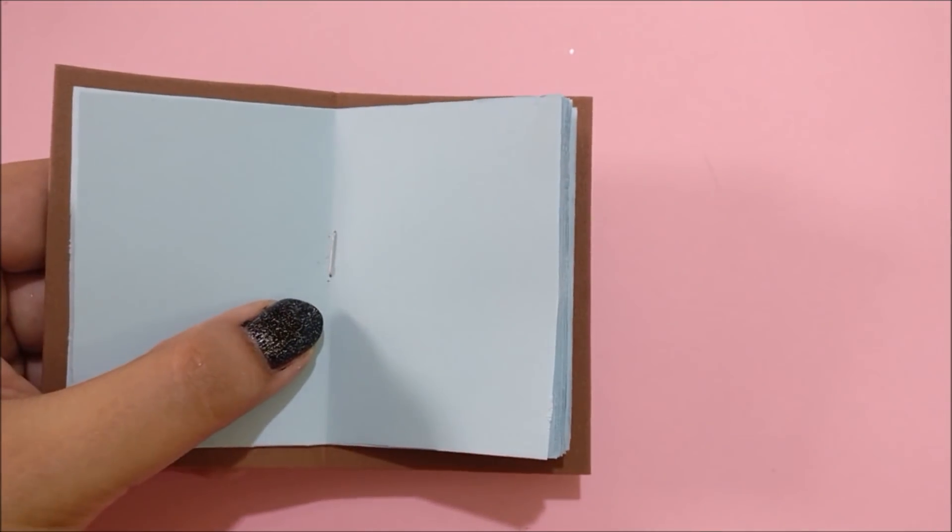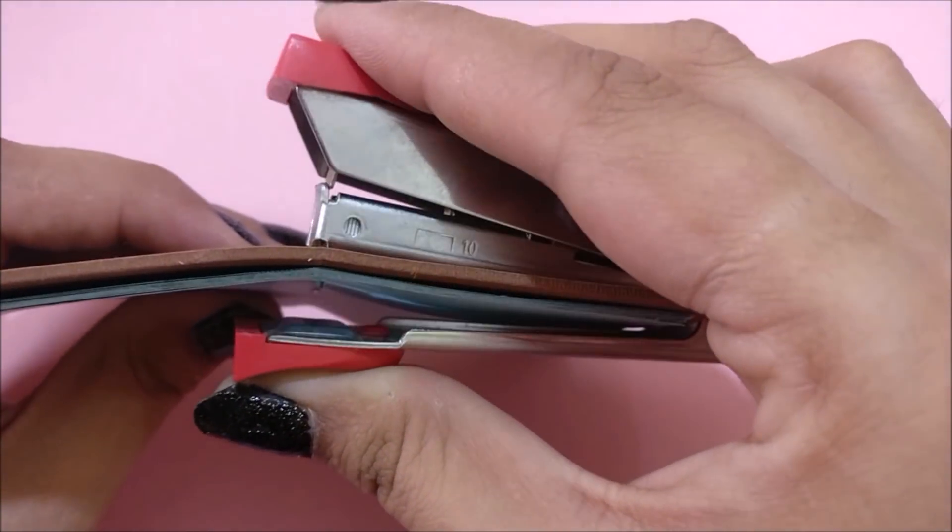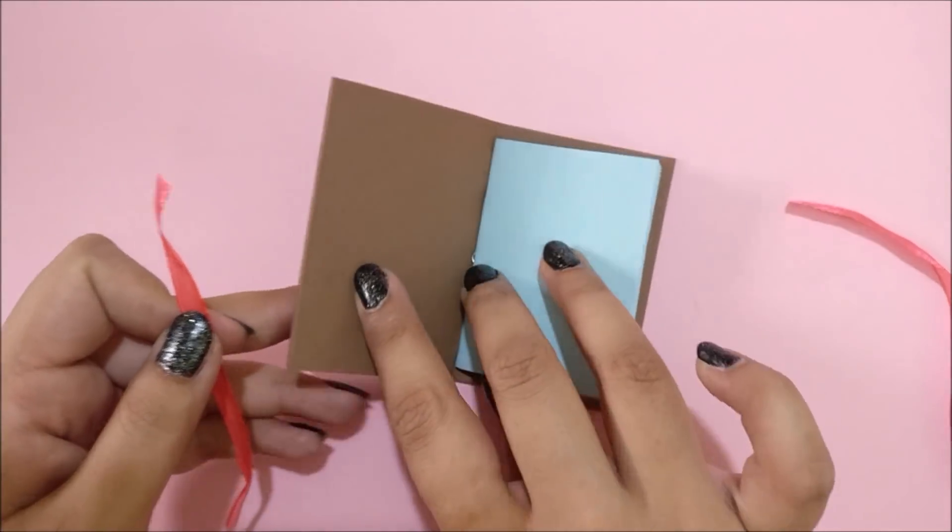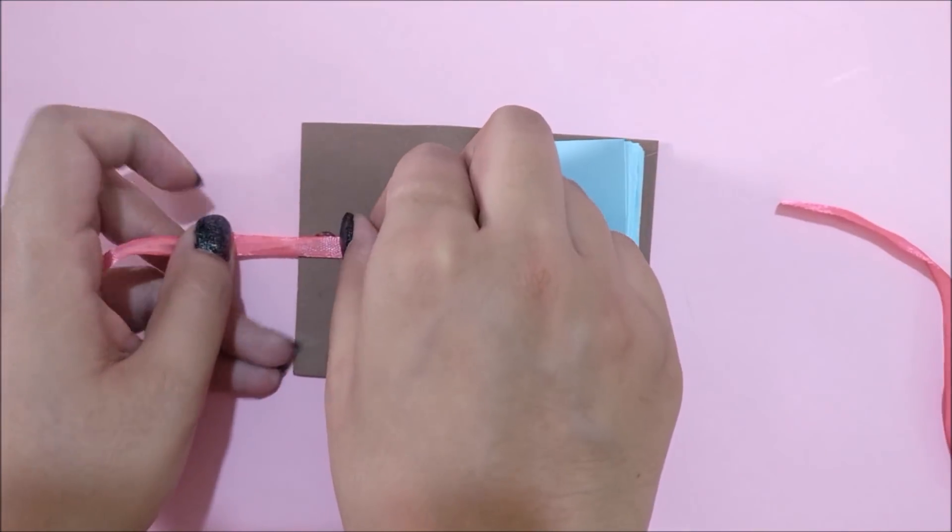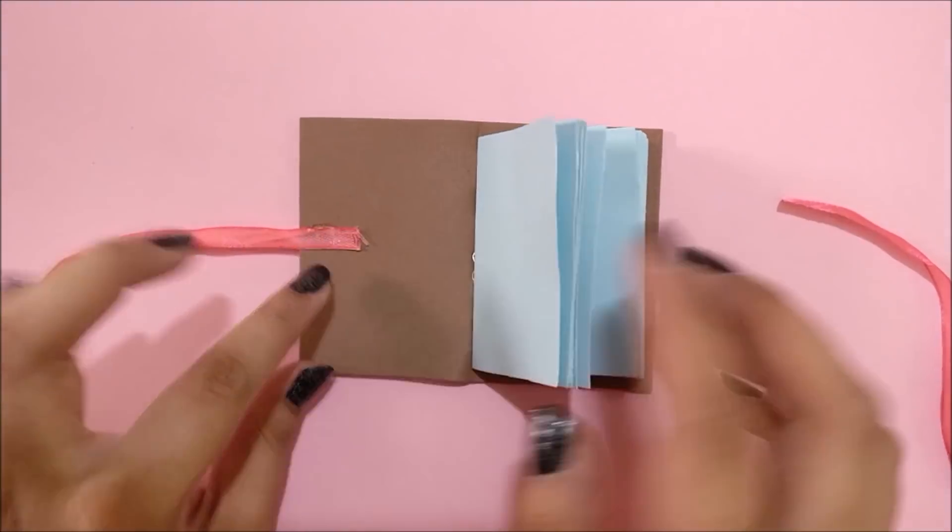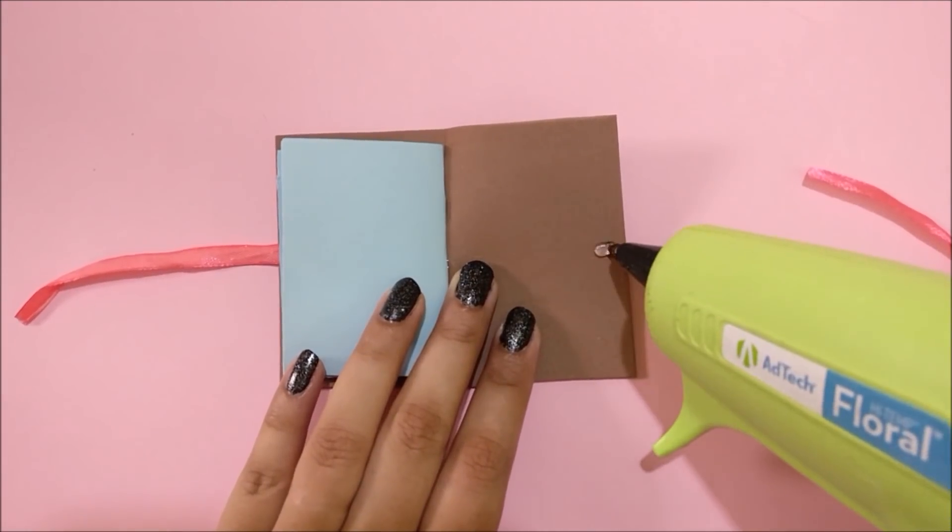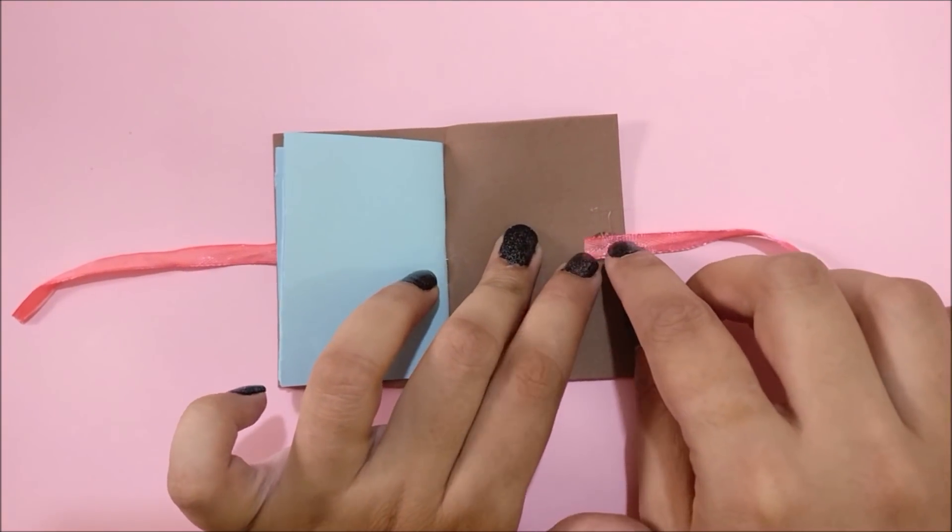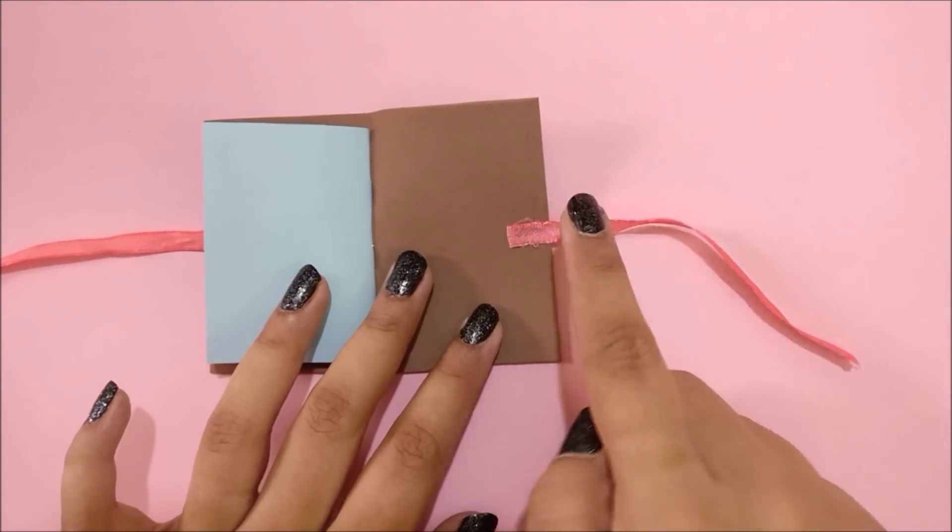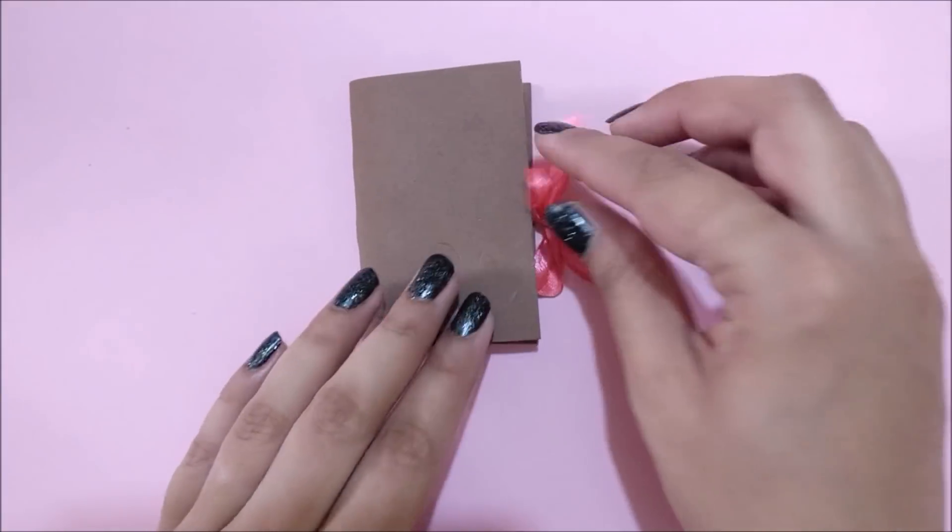Next I am stapling pages and foam all together on the folding line. Now this tape is not necessary and kind of extra, but I like the final result. Here I am hot gluing two pieces of ribbon to make a book closure. After drying, tie a pretty double knot.